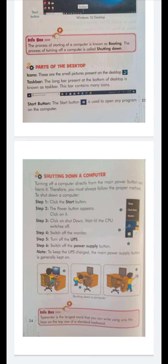Let's revise one time. Turning off a computer directly from the main power button can harm it. Therefore you must always follow the proper method to shut down a computer. Step one: click the Start button. Step two: the power button appears — click on it. Step three: click on Shut Down. Wait till the CPU is switched off. Step four: switch off the monitor. Step five: turn off the UPS. Step six: switch off the power supply button.